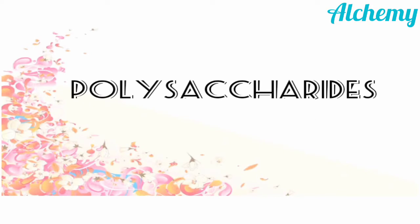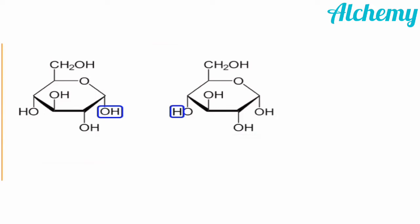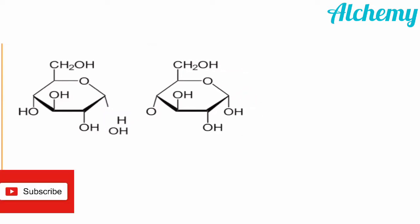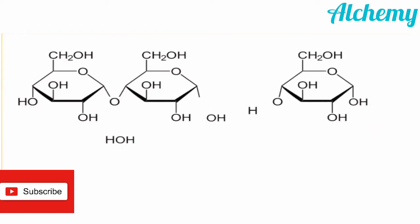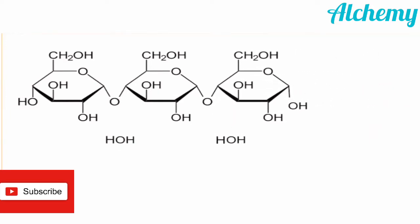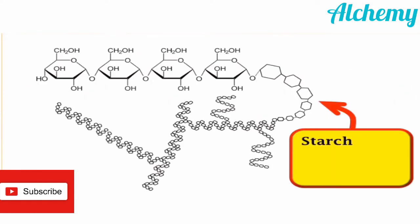Now we will discuss the formation and structure of polysaccharides, using maltose as a starting material. Two glucose units combine together to form maltose, where OH from one molecule and H from another combine to form a water molecule which gets eliminated. More and more glucose units get added to the maltose by the dehydration mechanism, as shown in this video, resulting in the formation of a polysaccharide called starch.